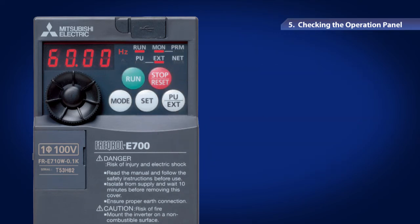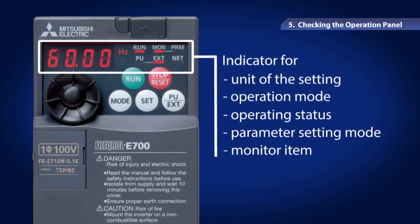In addition, you can check the unit of the setting, the operation mode, the operating status, the parameter setting modes, or the monitor item on the display of the operation panel.